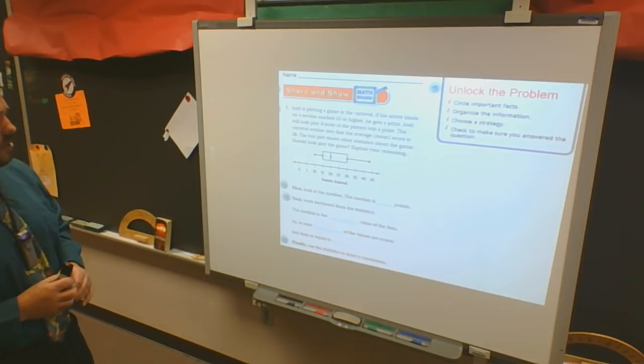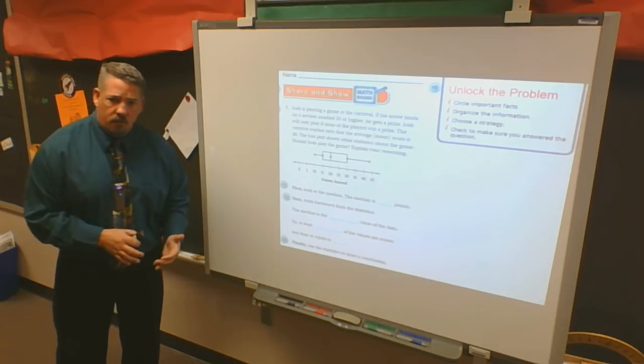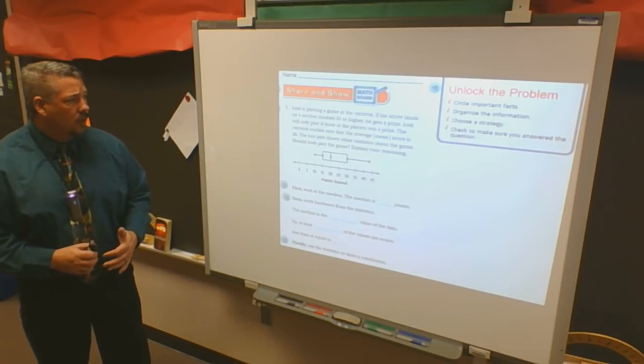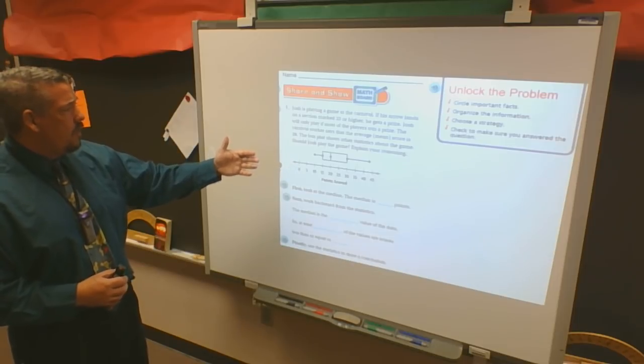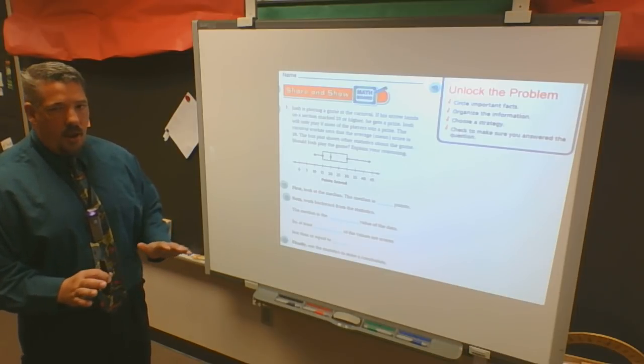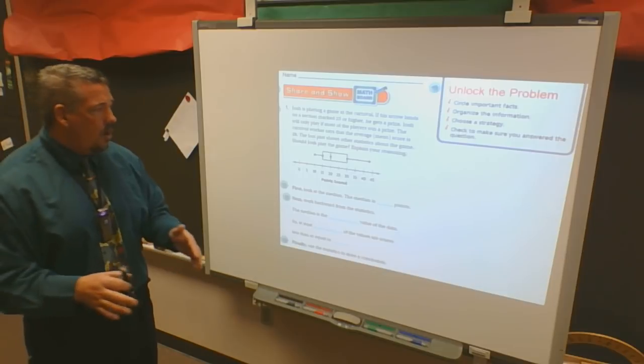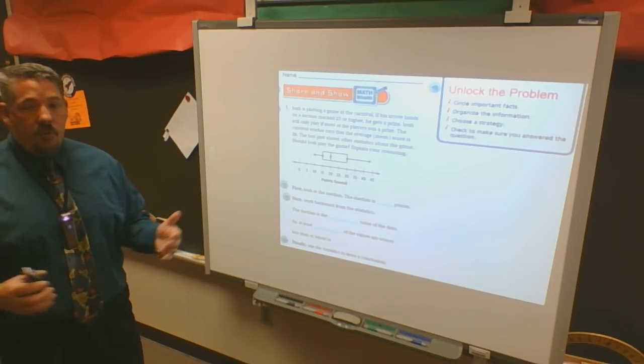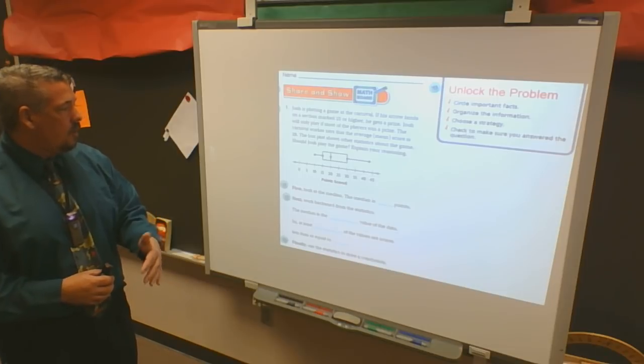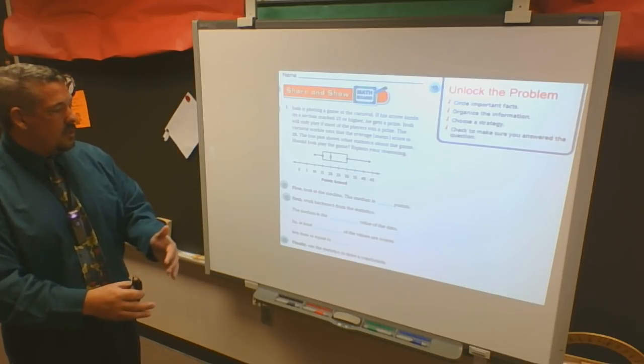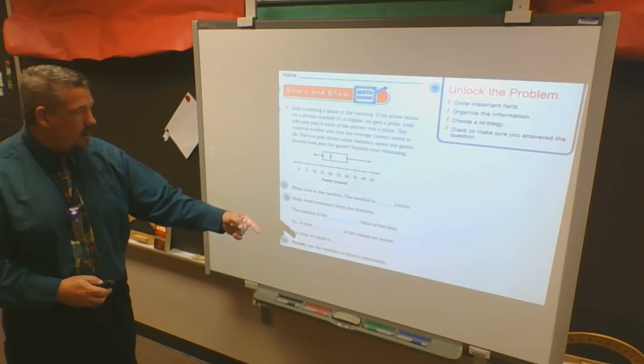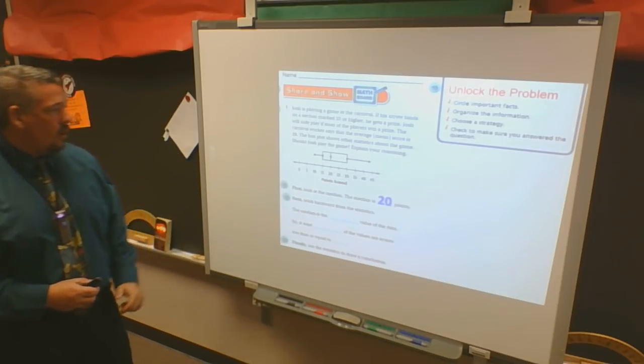All right, so let's look at the share and show problems that they give us. We'll have Josh. Josh is playing a game at the carnival. He has tickets. But he's going to be very picky about what games he's going to spend his tickets on. It says, in this particular game, if his arrow lands on a section marked 25 or higher, he gets a prize. Josh will only play, this is his stipulation, if most of the players win a prize. The carnival worker says that the average, or the mean, score is 28. The box plot shows other statistics about this game. Should Josh play the game, explain your reasoning. So they take you through the thinking pattern. First, I'm going to look at the median. The median is what? The median is 20. That's what it shows me, right there.